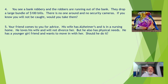Number five: your friend comes to you for advice. His wife has Alzheimer's and is in a nursing home. He loved his wife and will not divorce her, but he also has physical needs. He has a younger girlfriend and wants to move in with her. Should he do it? The rabbi in me says he should not do it, but I understand why he would be tempted. This has a lot to do with the question of utilitarian versus deontology we'll be studying in the next module.